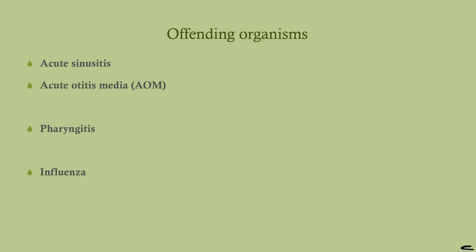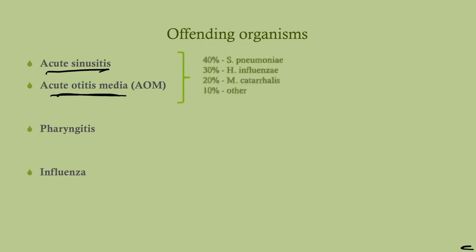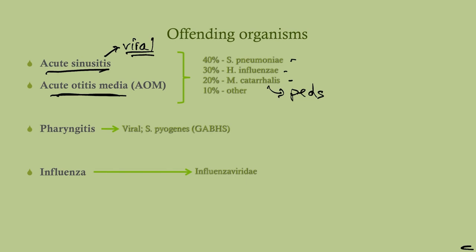Let's talk about offending organisms. With acute sinusitis and acute otitis media, the most common bacterial organisms are Strep pneumo, non-typeable H. influenzae, and Moraxella catarrhalis — particularly in children. About 10% will be other organisms. Sinusitis can be viral, but there is no such thing as viral otitis media. Pharyngitis can be viral or caused by Strep pyogenes, which is why we get the strep test. Influenza is always caused by influenza viridae — types A, B, and C.